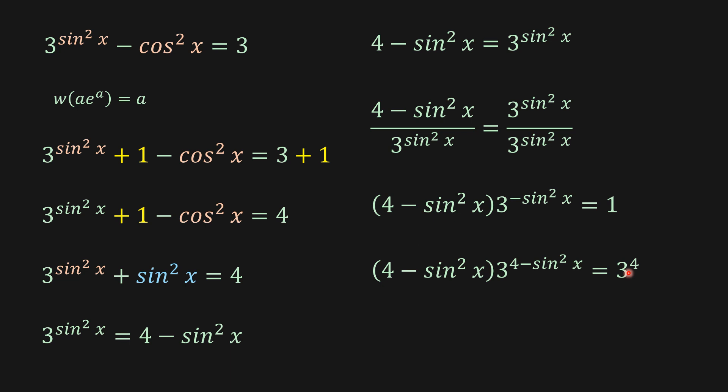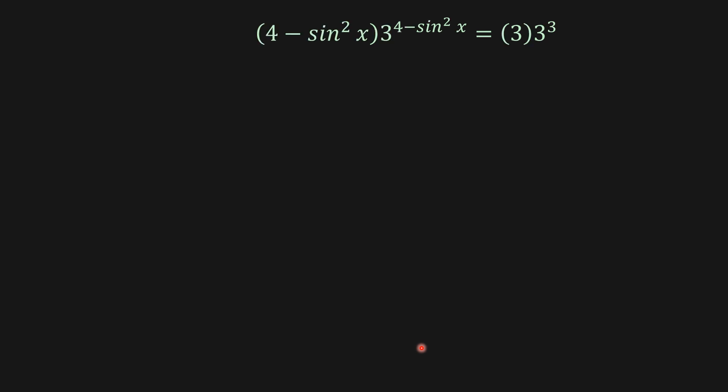So now, I'm just going to work on this 3 to the 4 here, which is going to be 3 times 3 to the 3. So now we're going to apply some properties here, which is ln of a to the n equals n ln of a, and then e to ln of a equals a.